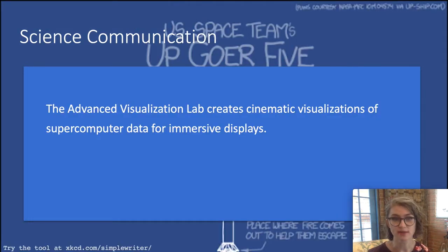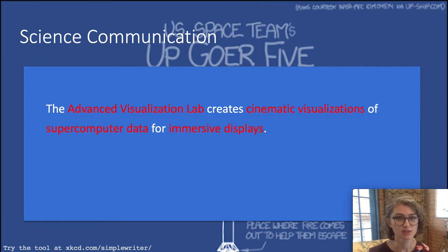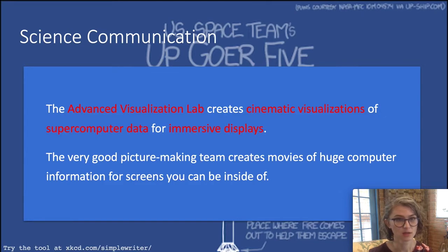Here's an example of some jargon that I might use to describe the work that I do. The Advanced Visualization Lab creates cinematic visualizations of supercomputer data for immersive displays. Now you guys are a scientific audience and it's probably even difficult to really comprehend what this is saying even to you guys. As you can see, in red I'm highlighting the words that are not among the top 1000 words within the English vocabulary. So here's a rewrite. The very good picture making team creates movies of huge computer information for screens you can be inside of. While this is kind of funny, it's undeniably a lot easier for people to understand. I wouldn't actually want to use this exact text when describing my work, but this is a good exercise in thinking about word choices. There is no shame in using understandable language to help connect with an audience.